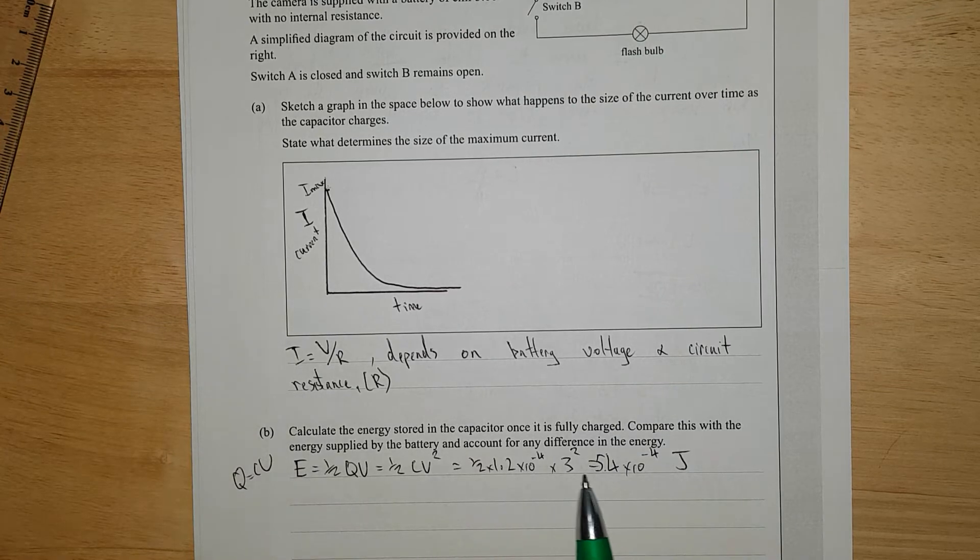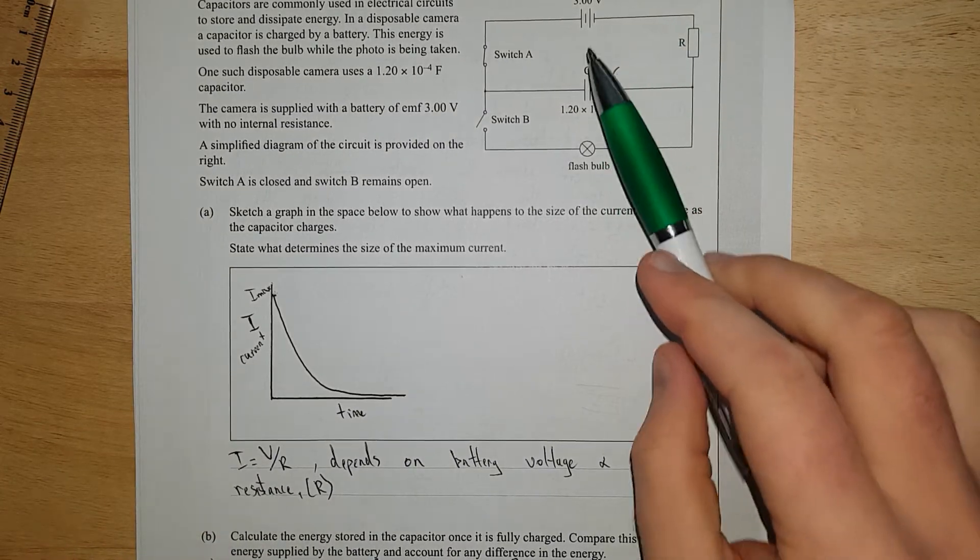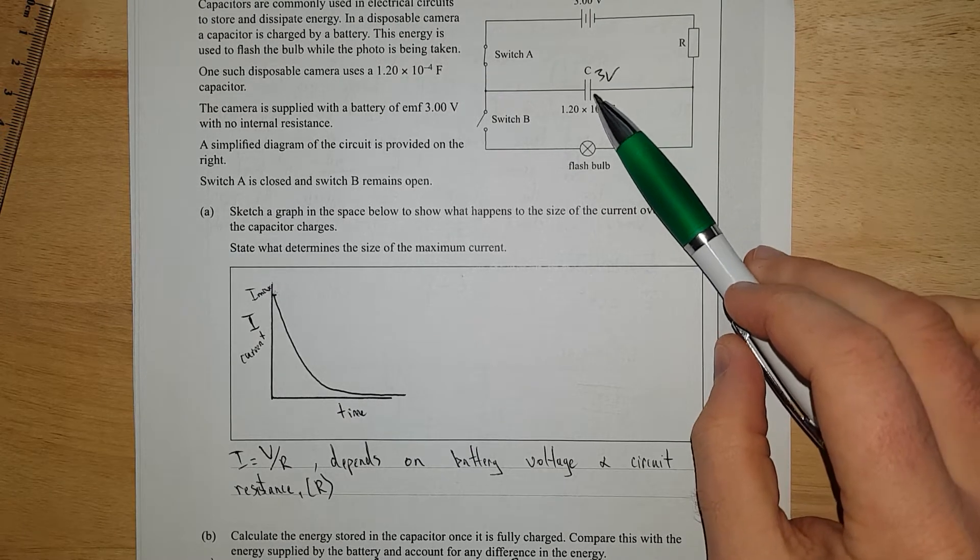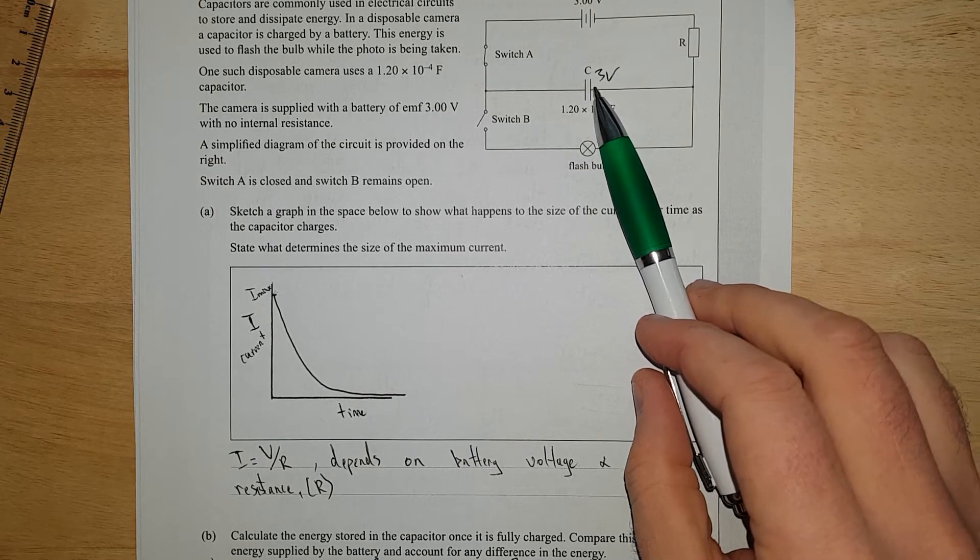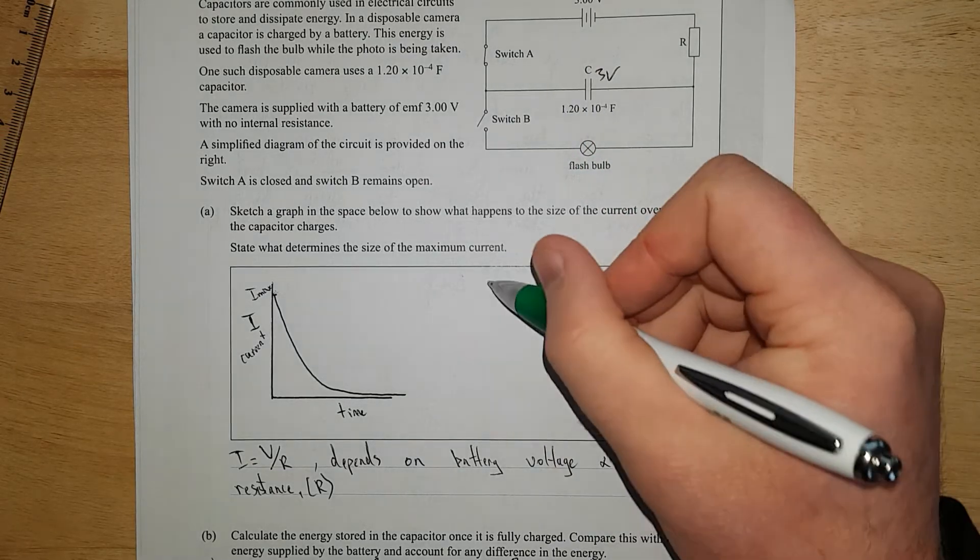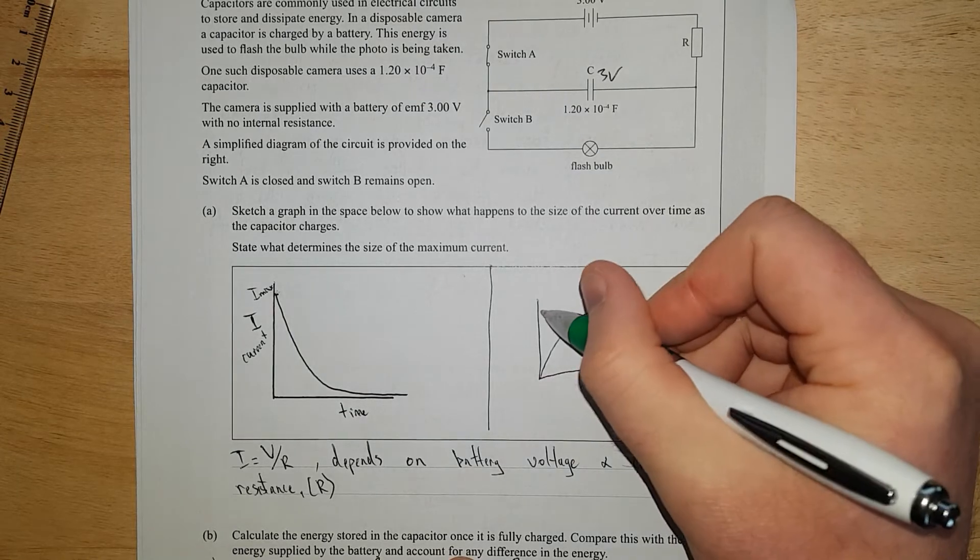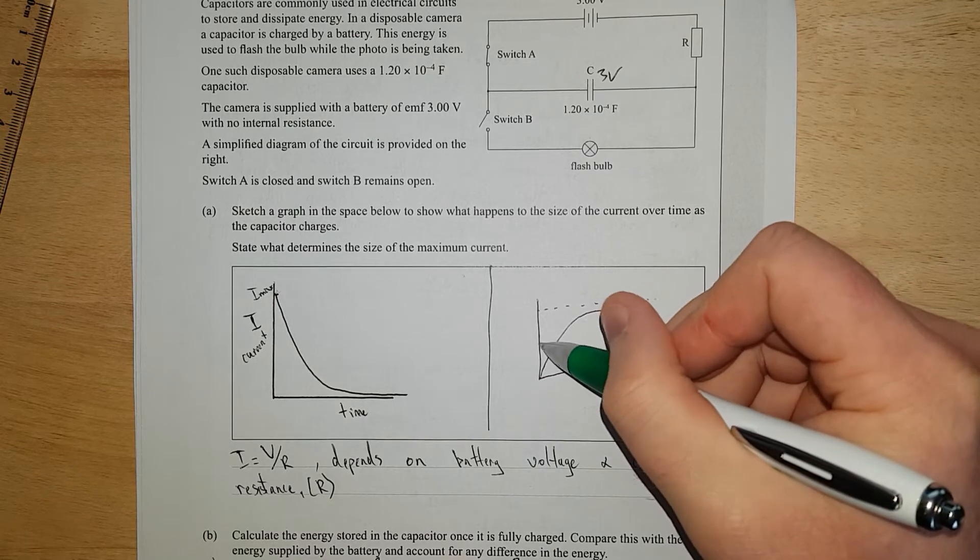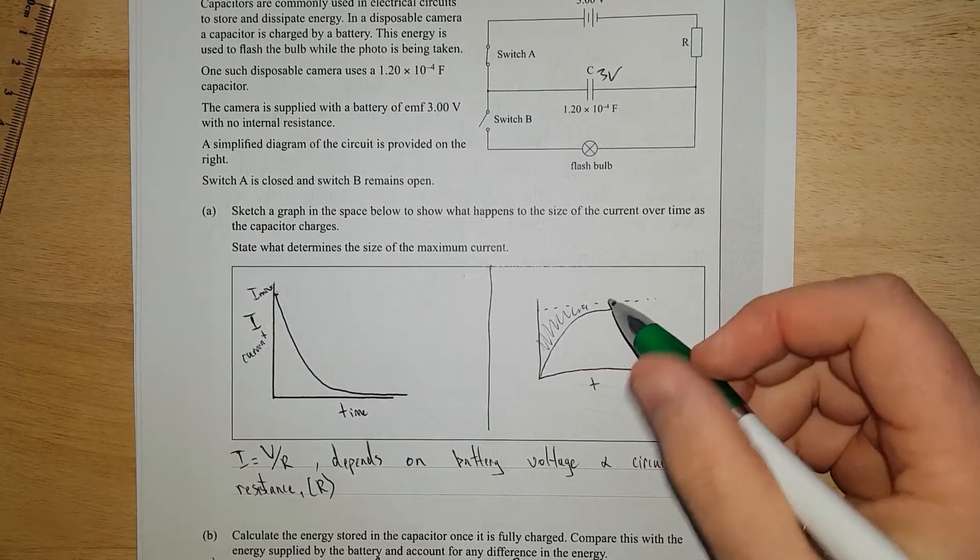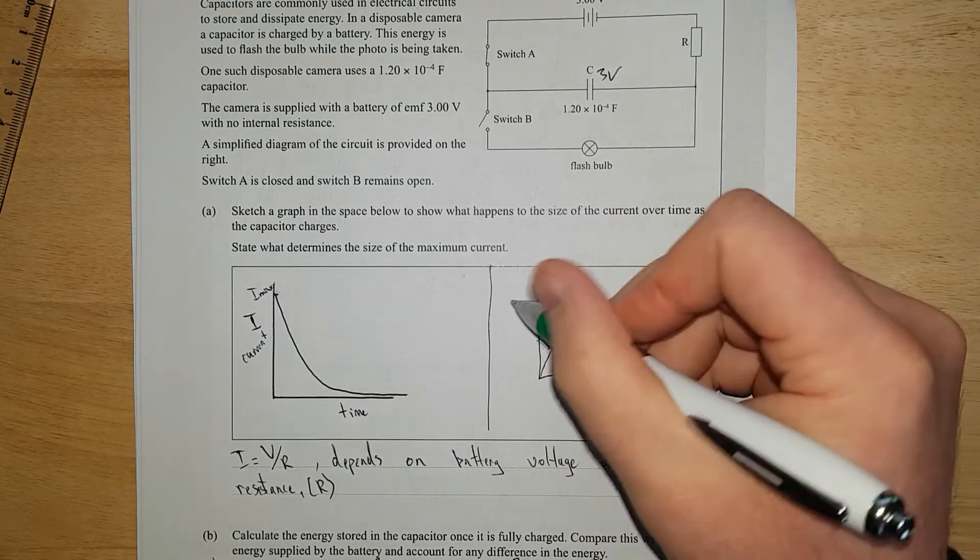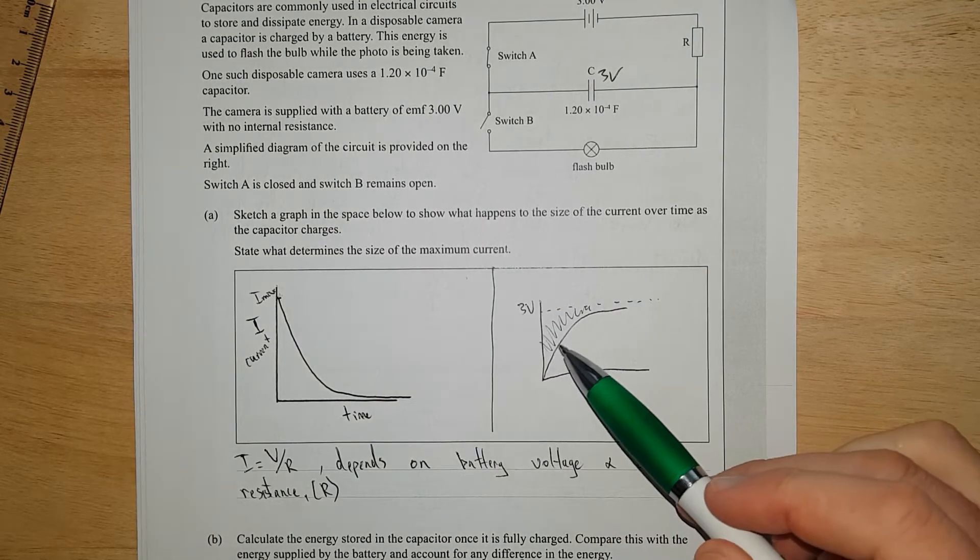Compare this with the energy supplied by the battery and account for any difference. When the capacitor is charging, the voltage is slowly increasing. Each plate starts off with, I don't know, half a joule per coulomb and works its way up. The voltage increases up like that. However, the supply voltage is just always 3 volts. So you get this difference, this shaded area here, where there's a bit of an energy discrepancy. Because this is time, the area under the graph is the total energy used. This shaded area can never... it's like a paradox.